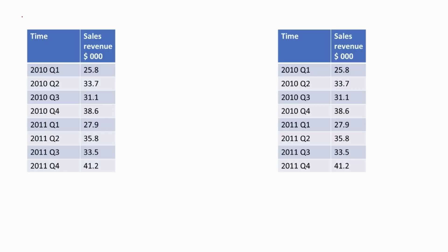Let me explain the Moving Average technique. We can use a specific number of points for the average — it can be any number 2 or above, which means we can consider 2 points, 3 points, 4 points, and so on. These are the same data sets as the linear regression.